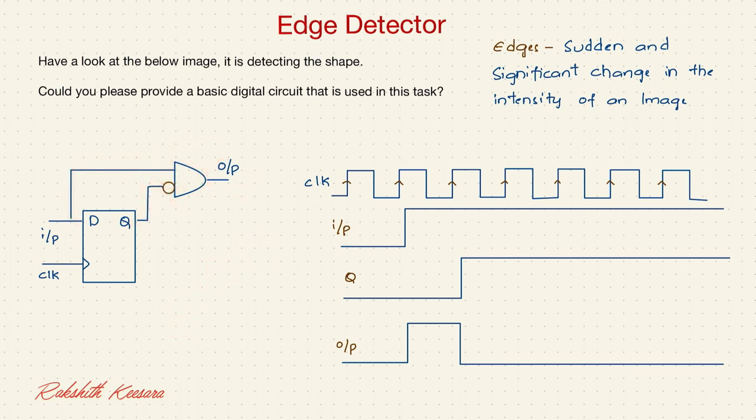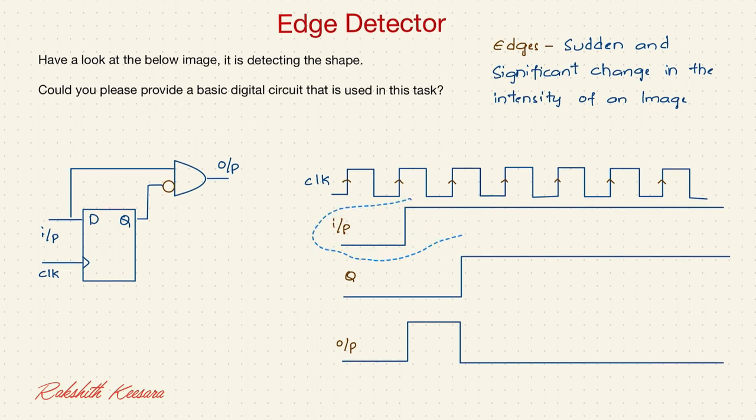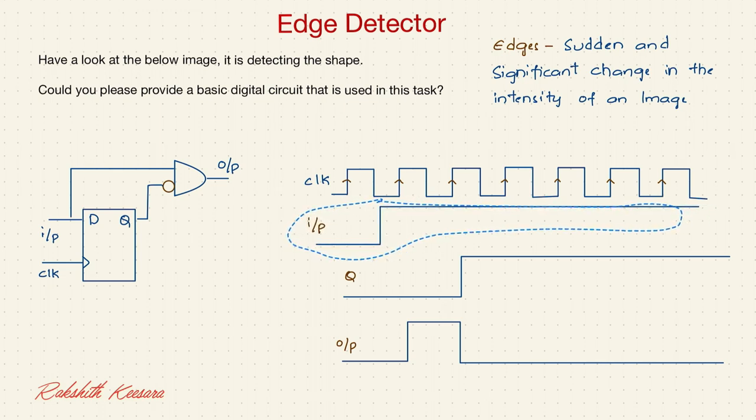Now, for example, what if this input is not synchronized? What I mean is, this thing here is changing in between like this.